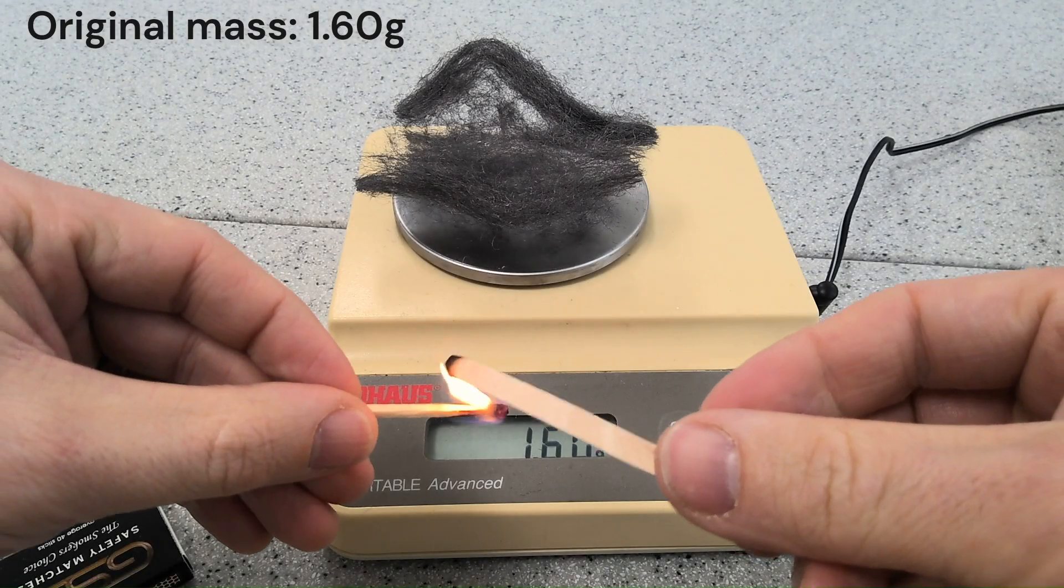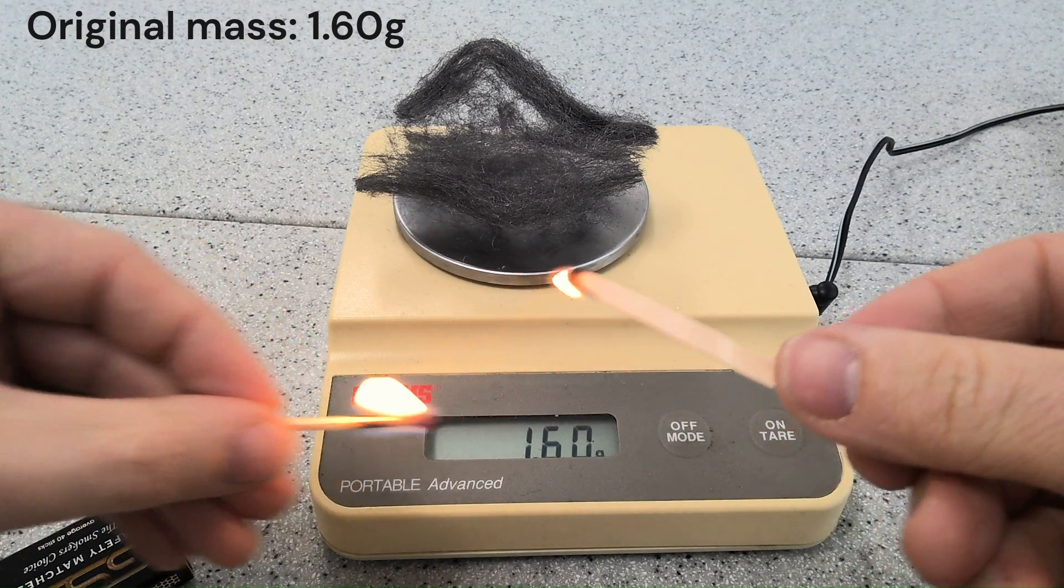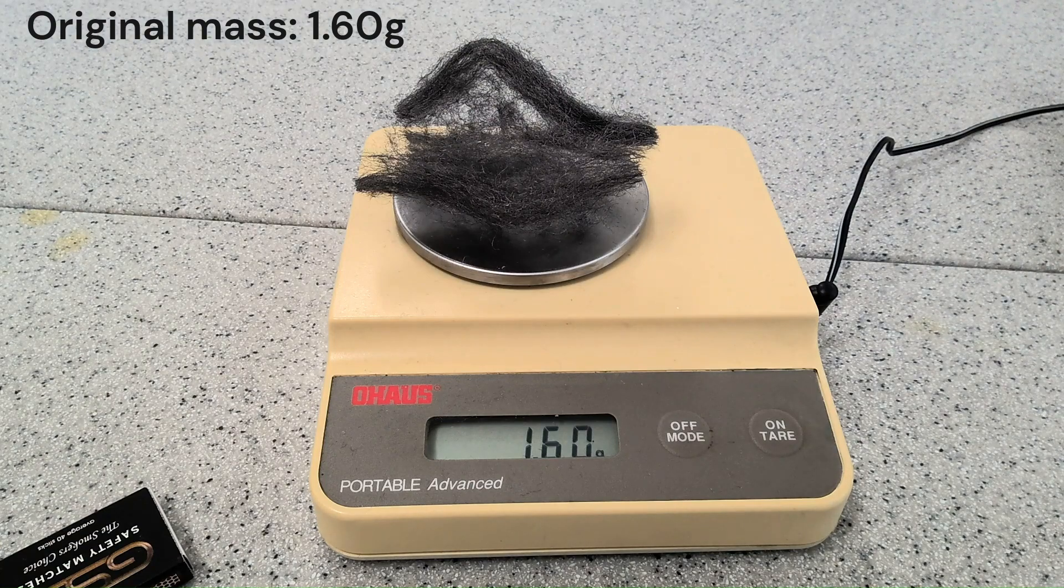Watch the readings on the electronic balance. If you record the mass every 5 seconds, it is easier to see the trend in the data.